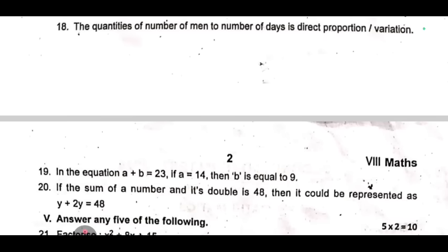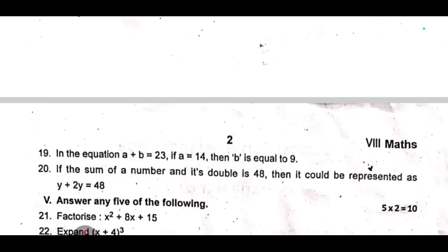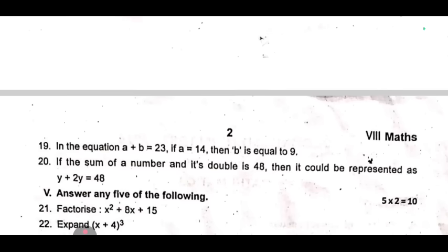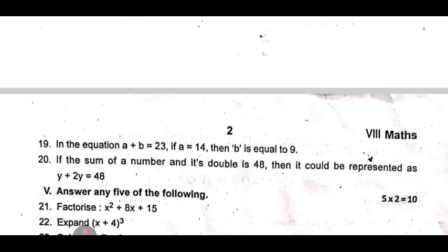19th one, the equation a + b = 23. If a = 14, then b is equal to 9. 20, if the sum of a number and its double is 48, then it could be represented as y + 2y = 48.